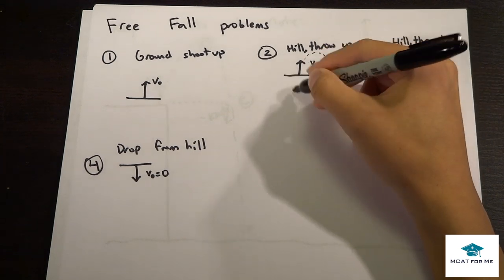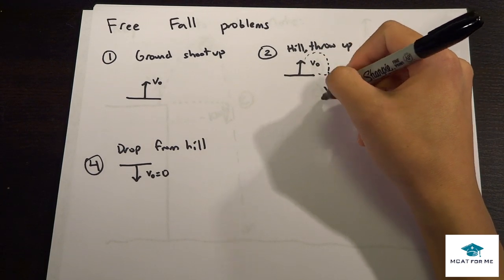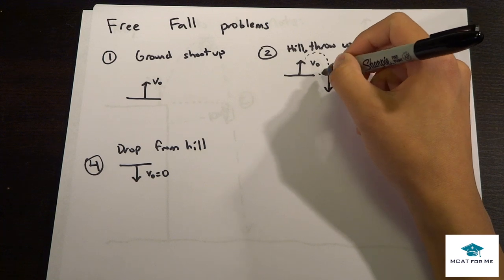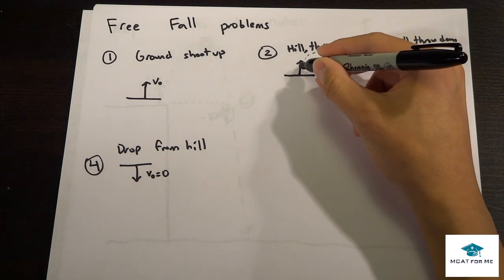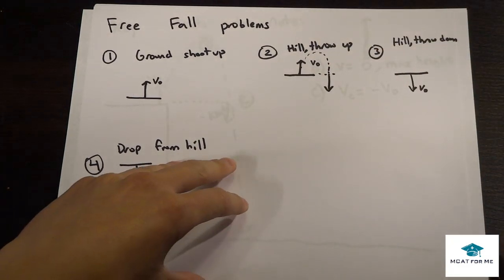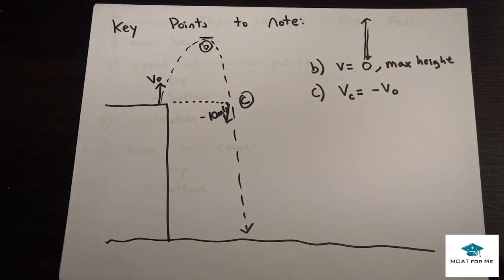For this type of question, they will never give you the speed that it is traveling down. You have to just know that. You have to know that this speed is the same as this speed but in the reverse direction. So that's an important thing to note. Everything else is fairly basic.